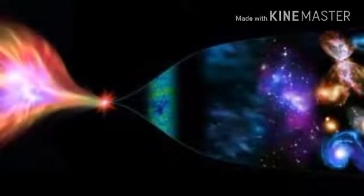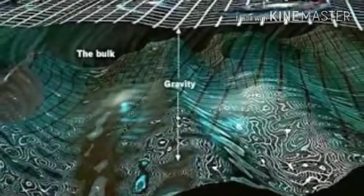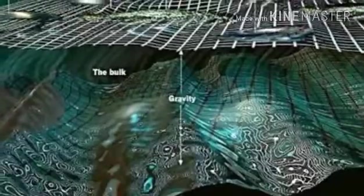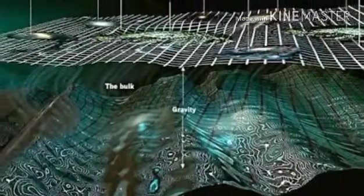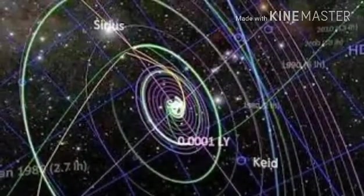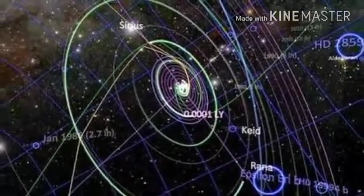No one's ever detected a naked singularity in our universe, but these hypothetical regions in space are predicted to form when huge stars collapse at the end of their lives, resulting in literally infinite density, something that our laws of physics cannot handle.